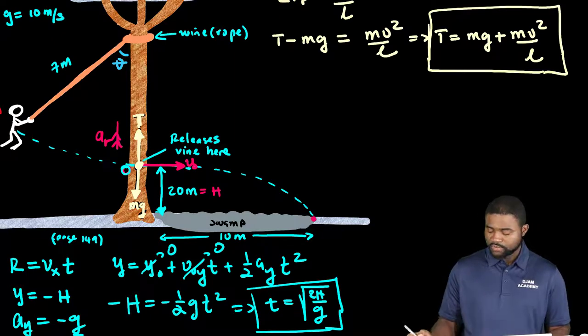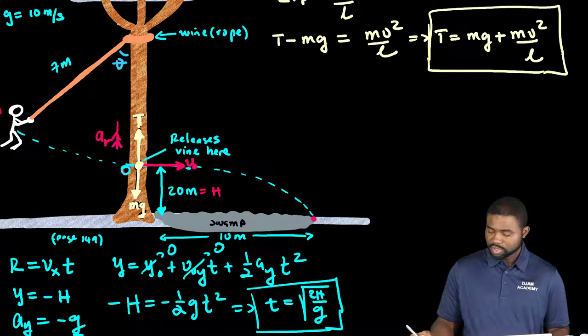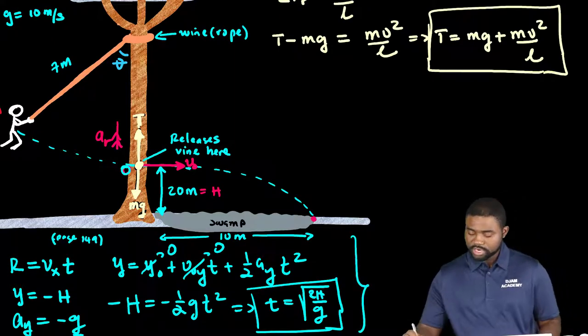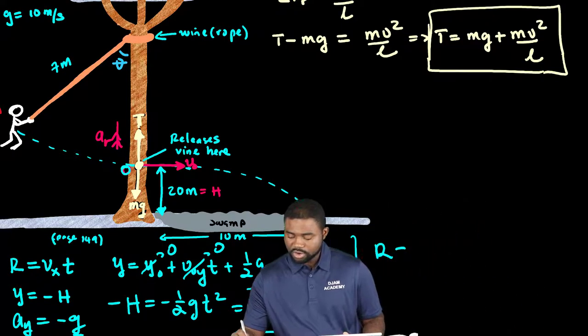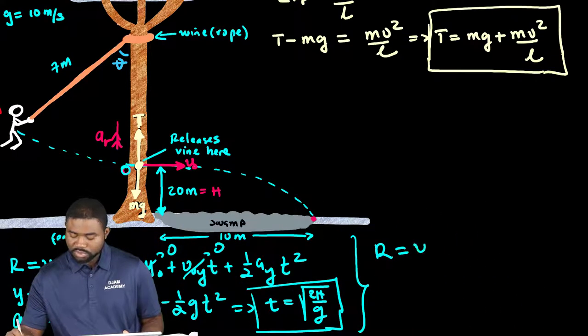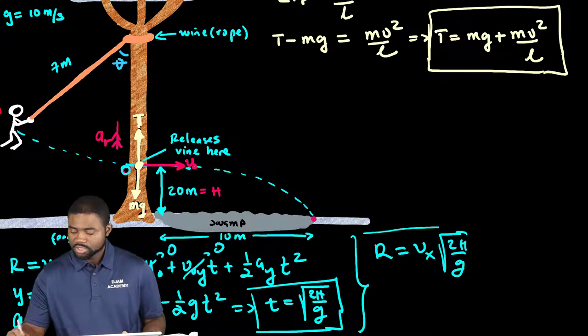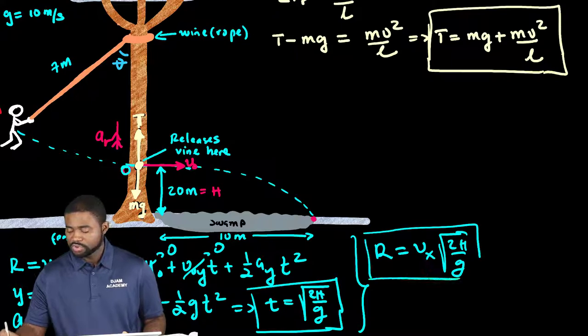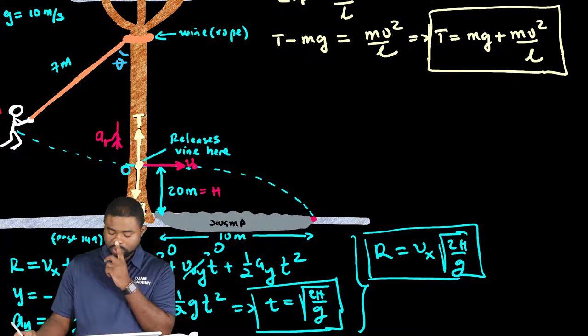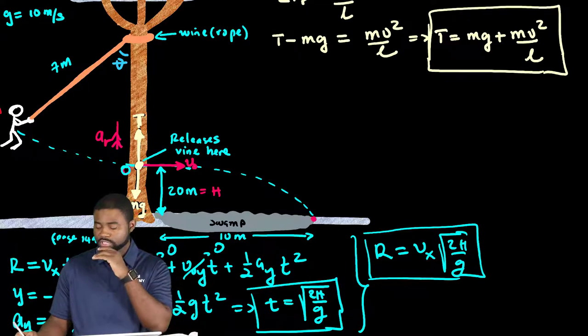And if that is the case, we can therefore see that the range r will be equal to vx multiplied by the square root of 2h all divided by g. This is the general expression for the range for a particle moving in a horizontal projection.